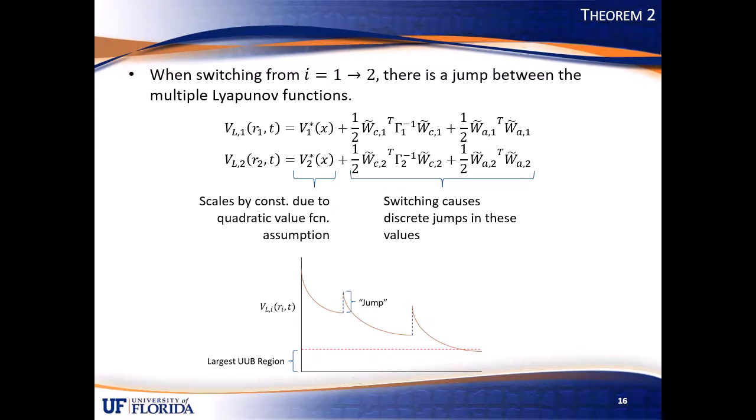So recall the figure from earlier in the presentation with the decaying Lyapunov function and discrete jumps. When switching between the different Lyapunov functions for each subsystem, the actor and critic weight errors will change discreetly. So it will jump up suddenly, discreetly. Assumption five on each subsystem's optimal value function is made to account for the portion of the jump caused by the different optimal value functions. More specifically, assumption five lets us account for the continuity of the states between each subsystem's optimal value function.